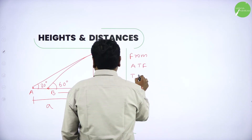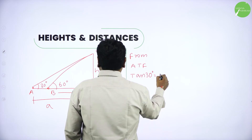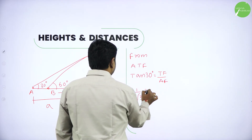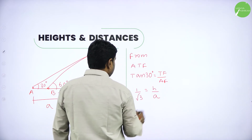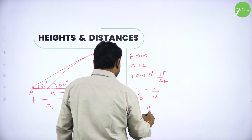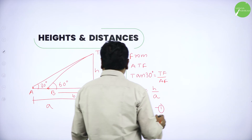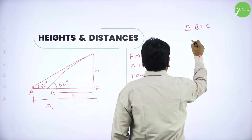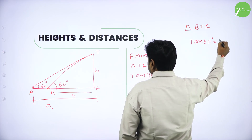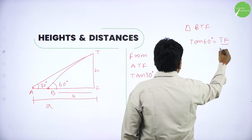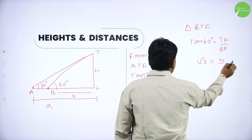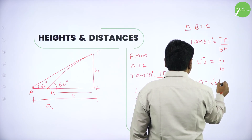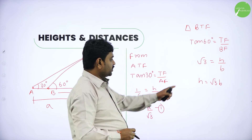From triangle ATF, tan 30 equals TF over AF. Tan 30 is 1 over root 3, TF is height H, and AF is A. So H equals A over root 3. From triangle BTF, tan 60 equals TF over BF. Tan 60 is root 3, TF is H, and BF is B. So H equals root 3 times B.